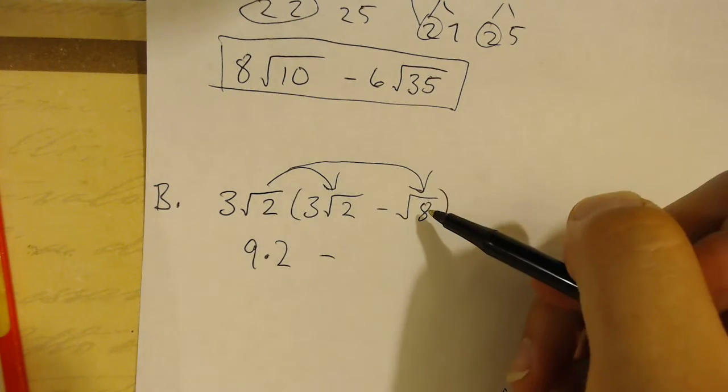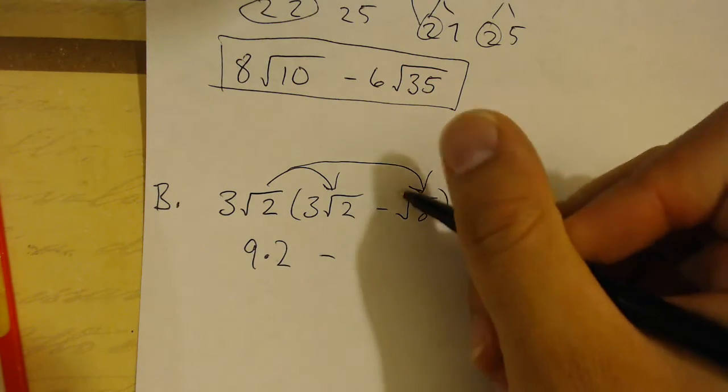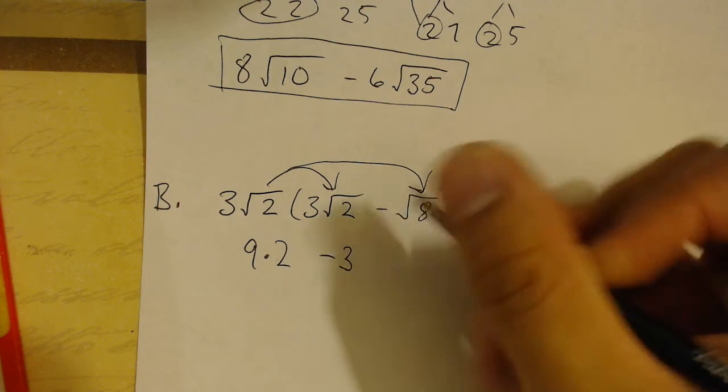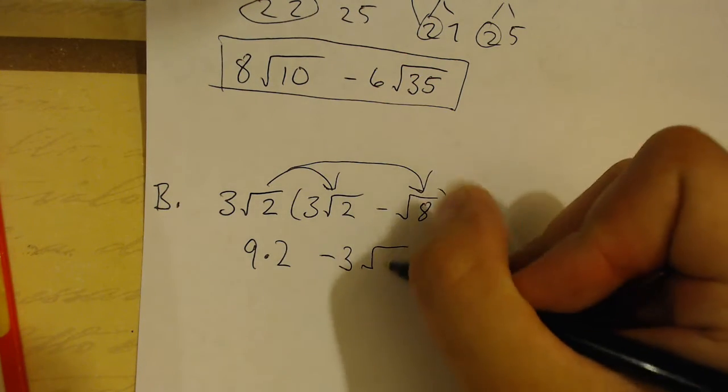And then over here, we get minus 3 times the negative 1, or the negative coefficient of 1 is just negative 3. And then square root of 2 times square root of 8 gives me square root of 16.